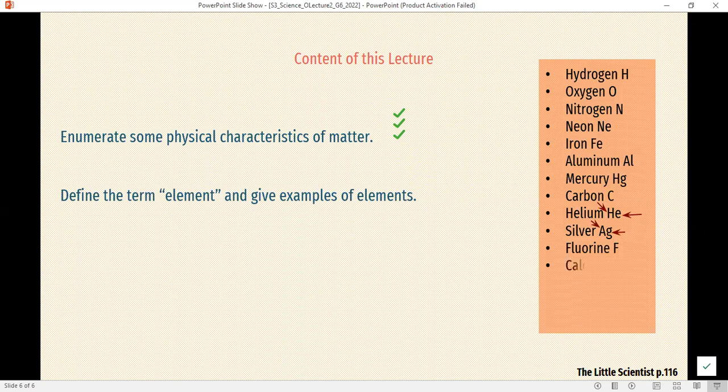This is the symbol for one element. Fluorine (F), calcium (Ca), chloride (Cl), copper (Cu), tin (Sn). We also saw sodium (Na).